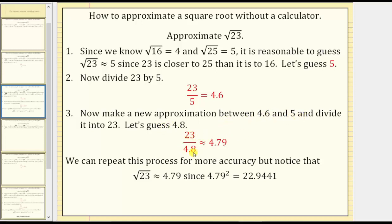Notice 23 divided by 4.8 is approximately 4.79, and 4.79 is very close to our approximation of 4.8. So we could repeat this process by now making a new approximation between 4.79 and 4.8. The square root of 23 is approximately 4.79, since the square of 4.79 is equal to 22.9441, which is very close to 23. As the quotient becomes closer and closer to our approximation, we have more and more accuracy.